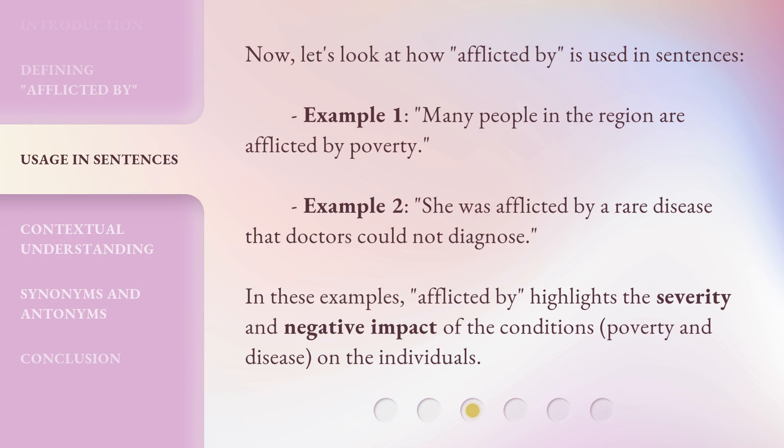Now let's look at how 'afflicted by' is used in sentences. Example 1: Many people in the region are afflicted by poverty. Example 2: She was afflicted by a rare disease that doctors could not diagnose. In these examples, 'afflicted by' highlights the severity and negative impact of the conditions — poverty and disease — on the individuals.